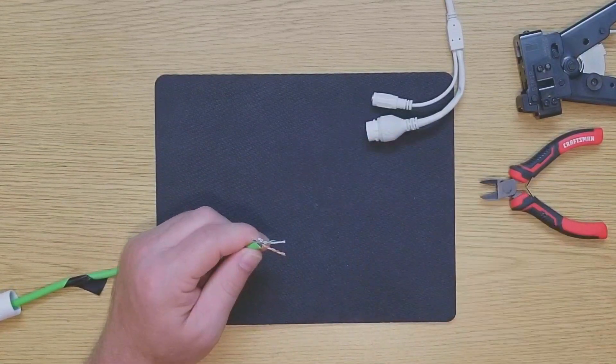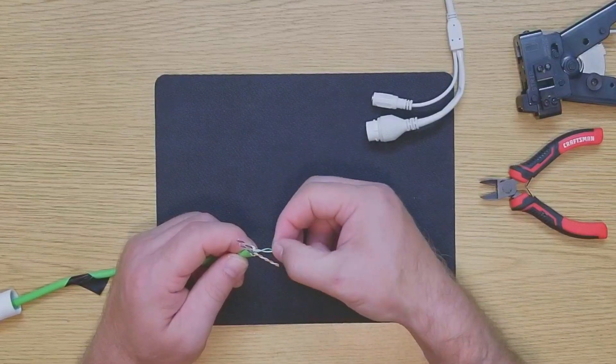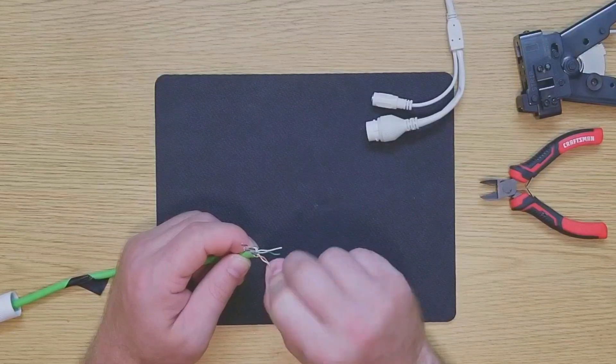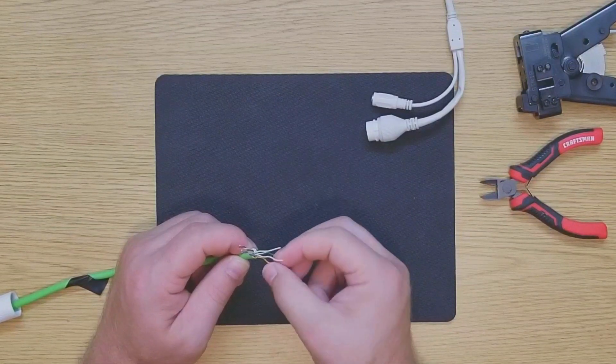Now this is Cat 6 cable, so it's got an insulator running down the center of it. Just break that off and move it out of the way, and then you're going to need to untwist your wires.